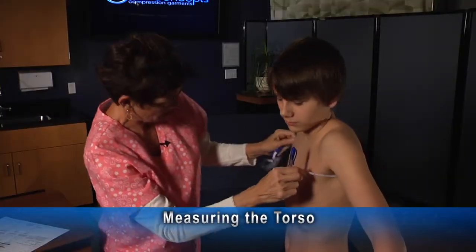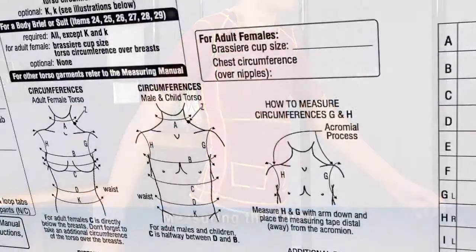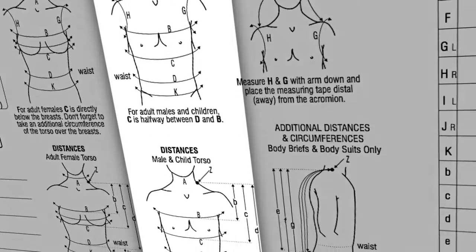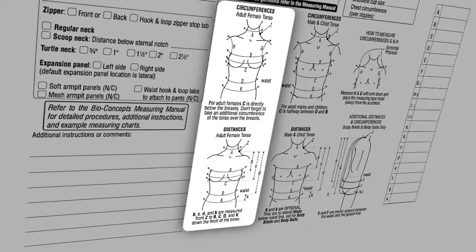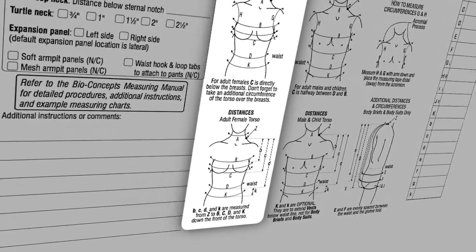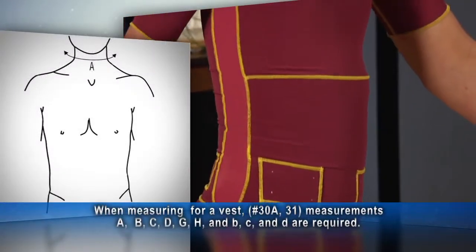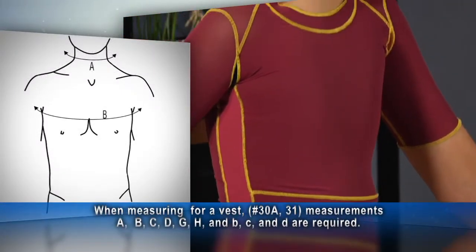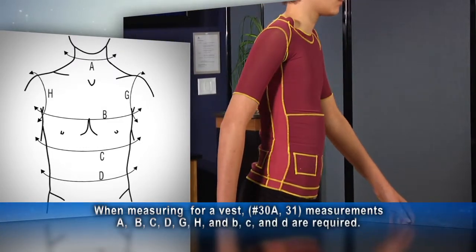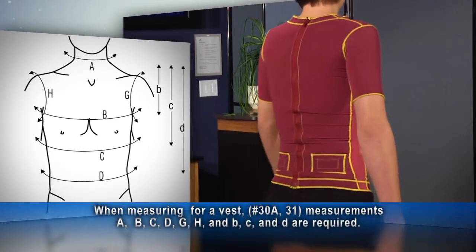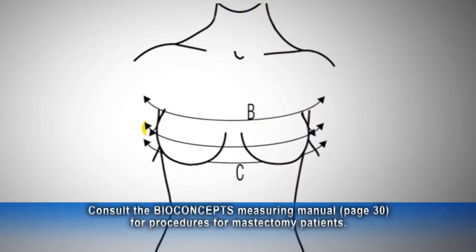We will illustrate the basic torso measurement procedure with measurements for a number 31 sleeved vest. When measuring the torso, the measurement designations are the same for a male adult and a small child of either gender. Adult females require additional measurements and slight but important measurement variations. When measuring for a vest, measurements A, B, C, D, G, H, and lowercase b, c, and d are required.